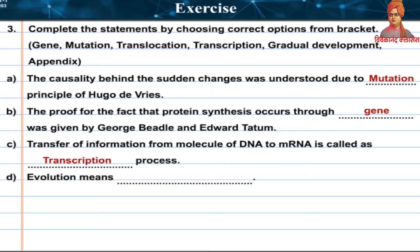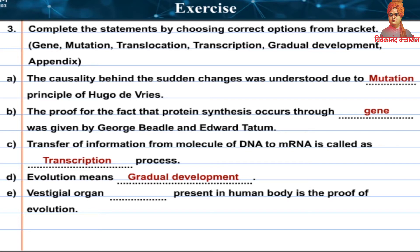D: Evolution means gradual development. E: Vestigial organ appendix present in the human body is proof of evolution.